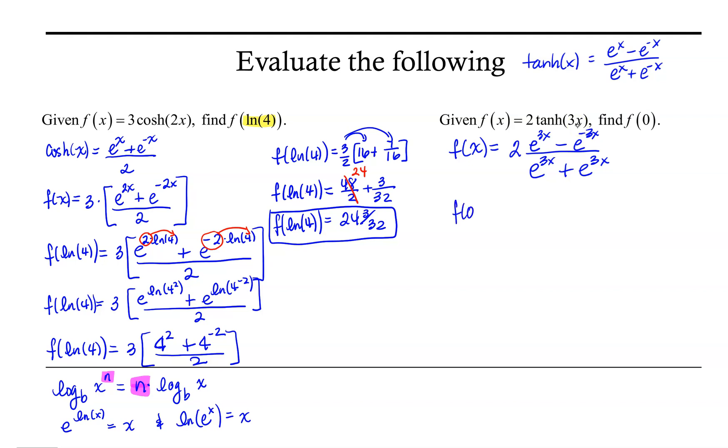So then f at 0 would be 2 times e to the 3 times 0 is 0 minus e to the negative 3 times 0, which is 0, over e to the 3 times 0 is 0. I lost my negative sign there.